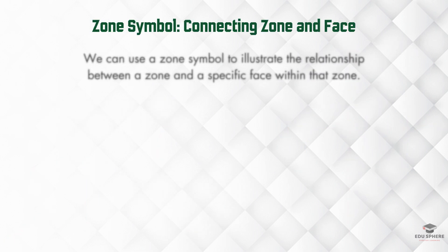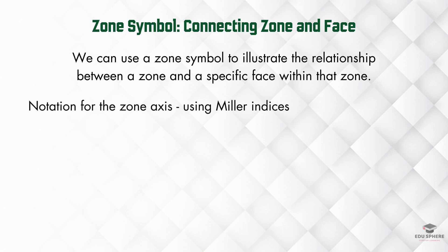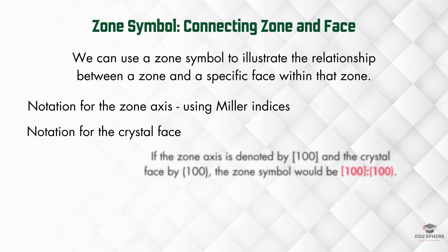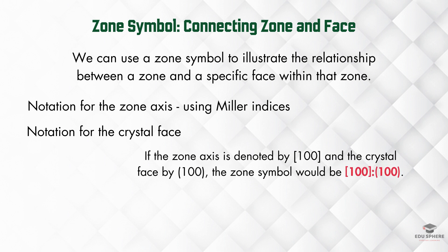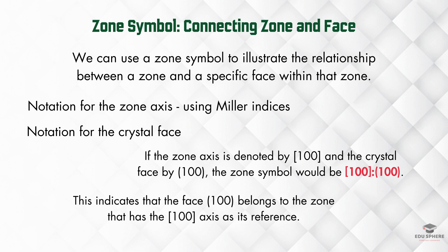We can use a zone symbol to represent the relationship between a zone and a specific face within that zone. The zone symbol combines two parts: the first part is the notation for the zone axis using Miller indices, and the second part is the notation for the crystal face. For instance, if the zone axis is denoted by 100 and the crystal face by 100, the zone symbol represents that the face 100 belongs to the zone that has the 100 axis as its reference.